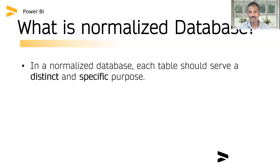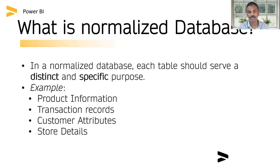A normalized database needs tables with a specific and distinct purpose. For example, we separate product information, transaction records, customer attributes, and store details. The product information table would include product name, product description, product size, weight, and product price.